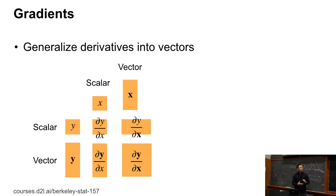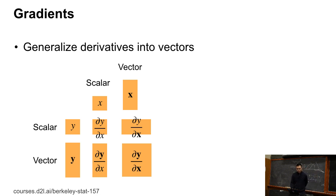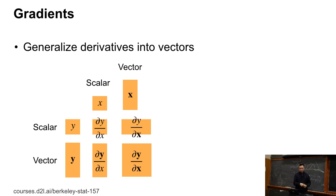Now we generalize from scalars to vectors — a key thing because all neural networks and machine learning involve vectors, matrices, and tensors. If both x and y are scalars, the gradient is a scalar. If x is a vector and y is a scalar, we get a row vector gradient. If x is scalar and y is a vector, the gradient has the same shape as y. If both x and y are vectors, we get a matrix of gradients.